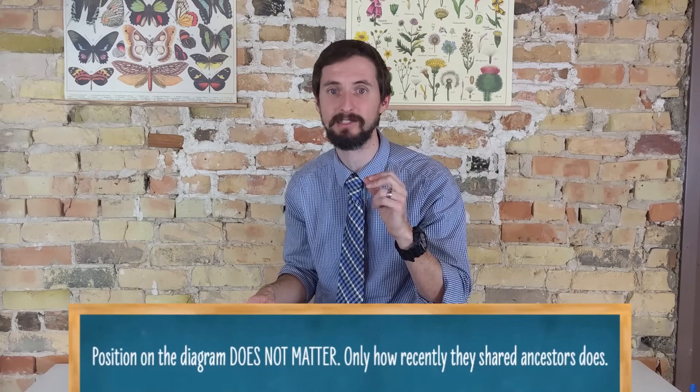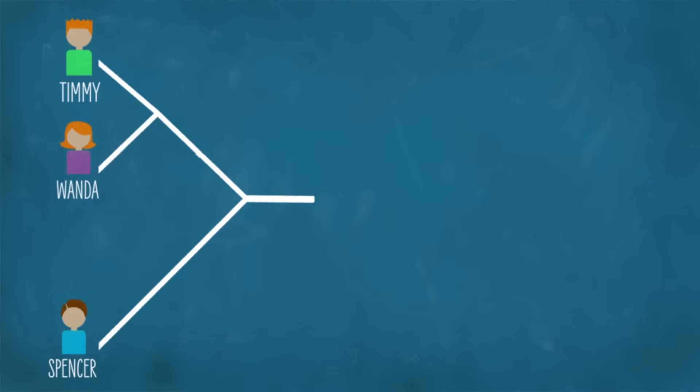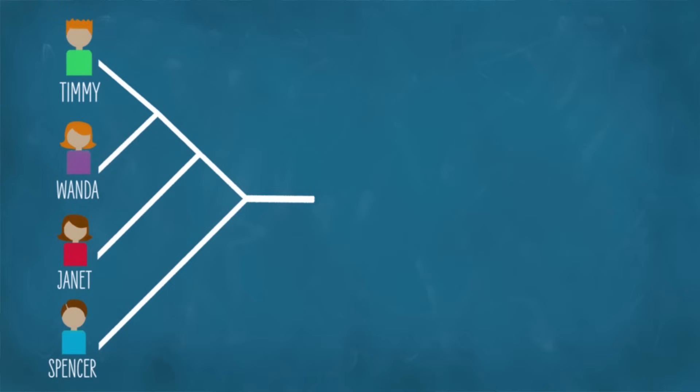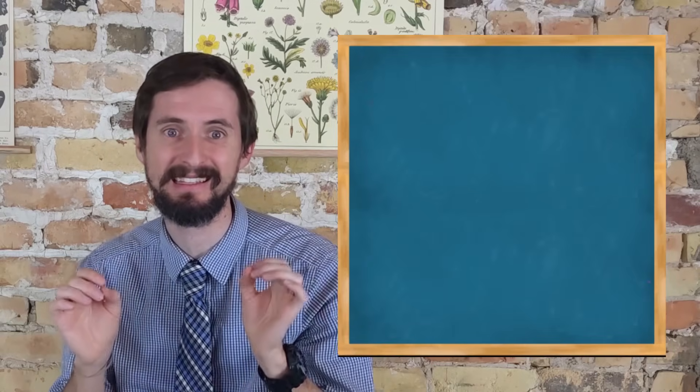If I add in a new person, Janet, and find out that she goes here on the diagram, what I know is that Janet shares ancestors more recently with Timmy and Wanda than she does with Spencer. But Spencer is equally related to Janet, Timmy, and Wanda, because the last ancestors that he shares with any of them he shares with all of them. This is exactly the same way that our phylogenetic trees work.